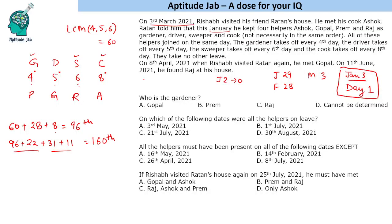So we have identified: Prem is the gardener, Gopal is the driver, Raj is the sweeper, and Ashok is the cook. The gardener is Prem. Now, the question asks on which dates were all the helpers on leave. All of them will be on leave on multiples of the LCM of 4, 5, 6, and 8, which is 120. So days 120, 240, 360, and so on are when all helpers are on leave.